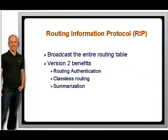The Routing Information Protocol, RIP, uses the Bellman-Ford Algorithm, which simply counts the number of hops or routers to a destination network and chooses the path that is the fewest number of hops. Any destination that is more than 15 hops away is considered inaccessible.